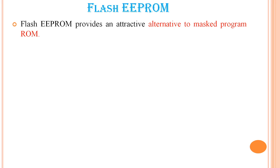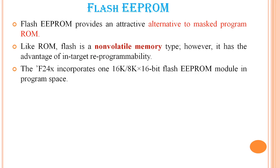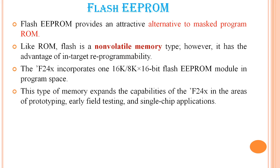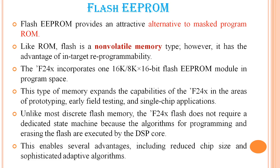We also have flash EEPROM. Flash EEPROM provides an attractive alternative to mask-programmed ROM. Like ROM, flash is non-volatile memory. However, it has the advantage of in-target reprogrammability. The F24X incorporates one 16K or 8K by 16-bit flash EEPROM module in program space. Unlike most discrete flash memory, this flash does not require a dedicated state machine because the algorithms for programming and erasing are executed by the DSP core, enabling reduced chip size and sophisticated adaptive algorithms.